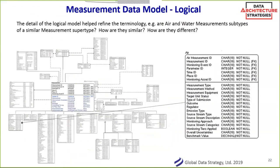That's often how we found out whether things were different. How is an air sample the same as a water sample? Well, there are certain things — we have a parameter, a time, a place, the asset that monitored it, and the value. But the source stream of that air type or emissions type is very different than a land body or a water body. So we were actually able to use those attributes to help us understand whether these things were the same.